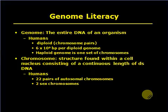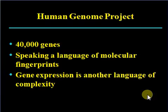The genome is the entire DNA of an organism. Humans have diploid chromosome pairs with 6 to 8 billion base pairs in the diploid genome. The haploid genome is one set of chromosomes. Chromosomes are found within a cell and consist of a continuous length of double-stranded DNA. Humans have 22 pairs of autosomal chromosomes plus sex chromosomes. The human genome contains approximately 40,000 genes, and gene expression adds another layer of complexity.